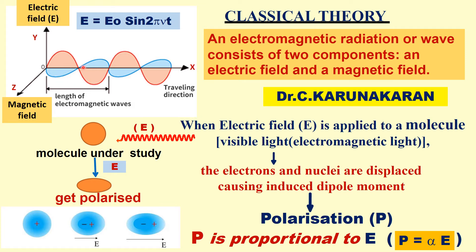These two field vectors are mutually perpendicular to each other and also to the propagation direction of the wave. When an electromagnetic radiation falls on a molecule, or when an electric field is applied to a molecule — especially visible light, which is used in Raman spectroscopy — the electric field interacts with the molecule because of electronic motion. In the case of NMR and EPR, the magnetic field vector interacts with the molecule, for example a paramagnetic molecule with its spin.